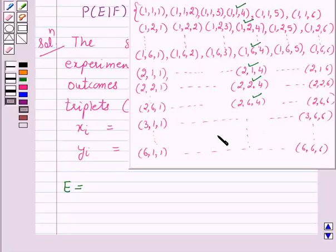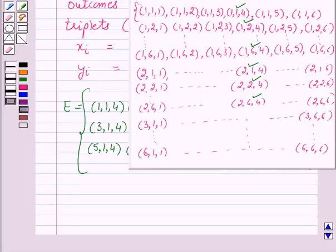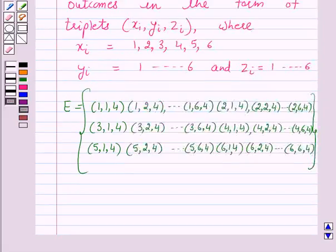Again, (4,1,4), (4,2,4), up to (4,6,4). Then (5,1,4), (5,2,4), up to (5,6,4). Similarly, (6,1,4), (6,2,4), up to (6,6,4). So E is the set of elements which have 4 on the third throw.